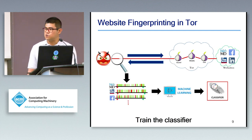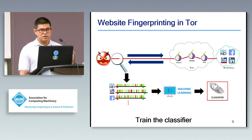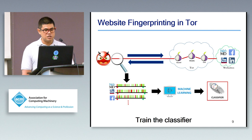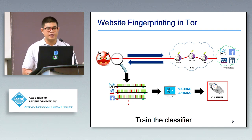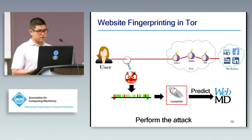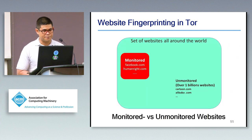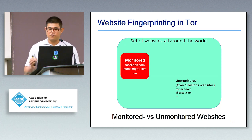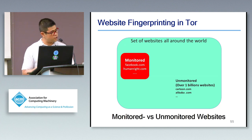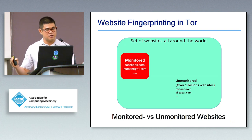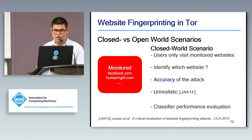To perform the attack, the attacker first trains a classifier by visiting the websites he wants to monitor, gathering network traffic samples, and using those samples to train a machine learning classifier — which we call the website fingerprinting classifier. When performing the attack, the attacker intercepts network traffic from the user and feeds it into that classifier to predict the website the user may visit. Since it's impossible to train a classifier to recognize all websites, the attacker determines a limited set of websites to monitor, which we call monitored websites. Any website outside that set is called an unmonitored website.